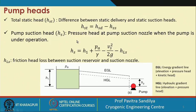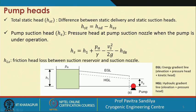Next we have the pump suction head. Here we are finding the pressure head at the pump suction nozzle when the pump is under operation. The difference from the static case is that when the pump is operating there is a kinetic head and also pressure loss due to friction. So the pump suction head under operation includes both the kinetic head and the frictional loss inside the pipelines, and HLS is the friction head loss between the suction reservoir and the suction nozzle.